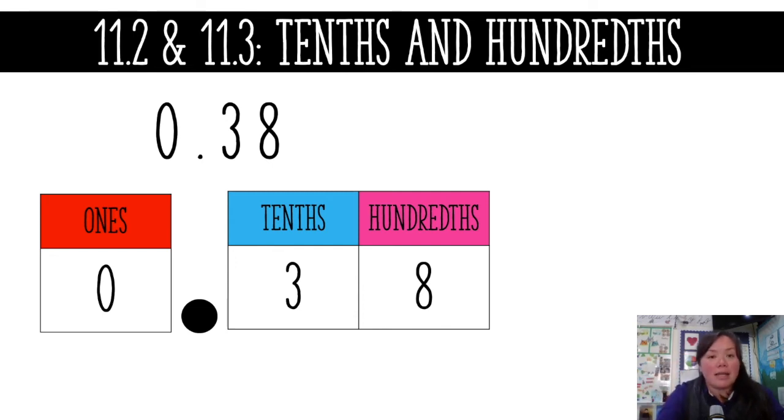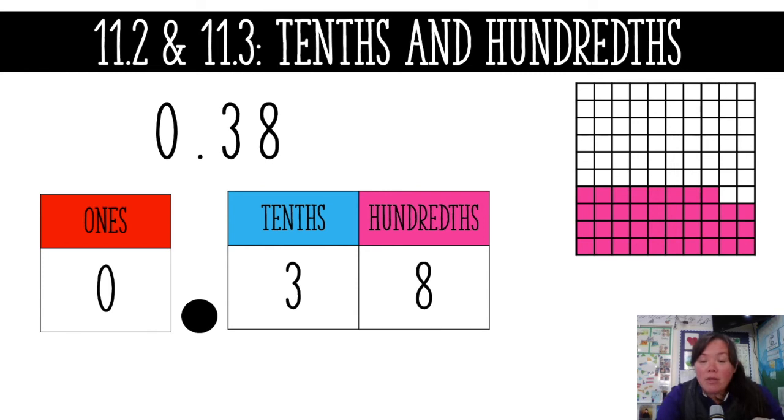If we wrote it out, it would be 0.38. It looks a lot like 38 cents here, guys, so if you think of money it might help you out here. I shaded 38 squares - you can see three full lines: 10, 20, 30, and then eight more squares on top of that. So there's a total of 38 out of a hundred that are shaded, and my fraction looks like this: 38 hundredths. So I got the number 0.38, 38, and 38 over 100.